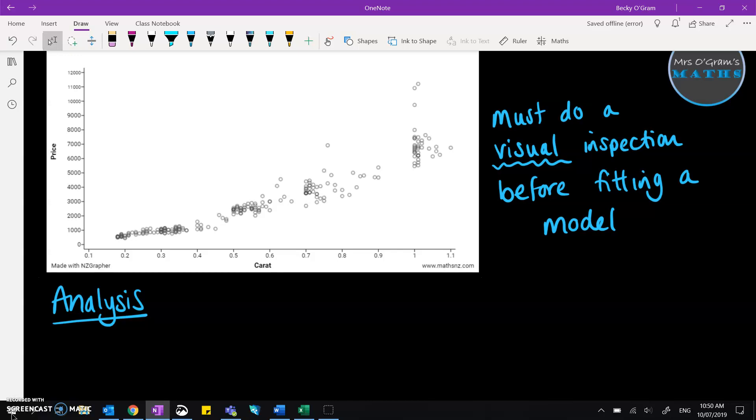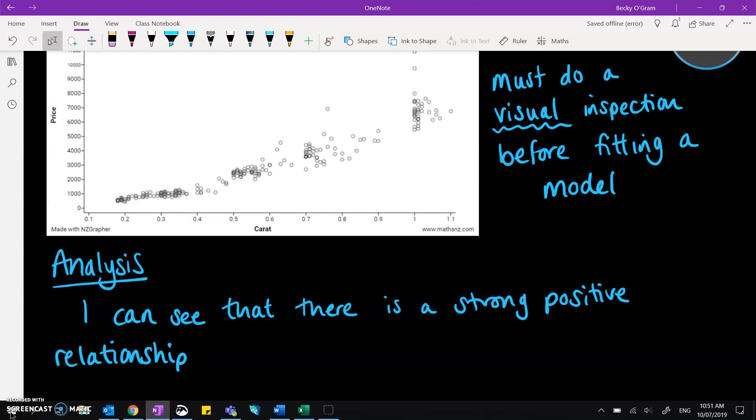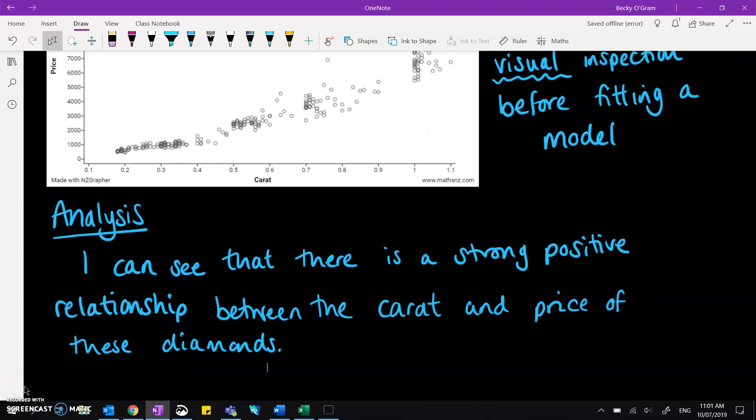So with this one, we're going to say that that's a reasonably strong relationship and it's positive. The dots are going up to the right and they are reasonably close together. We'll talk about a little bit more detail that we can do with this particular graph later. Now, to finish off that sentence, you need to have it in context. So we finish that by saying that we can see there's that relationship between the carat and price of these diamonds.